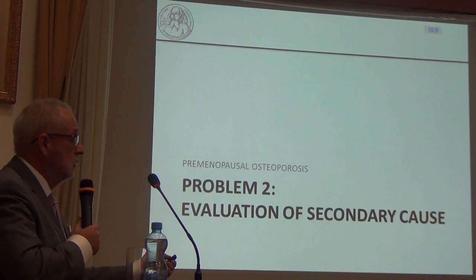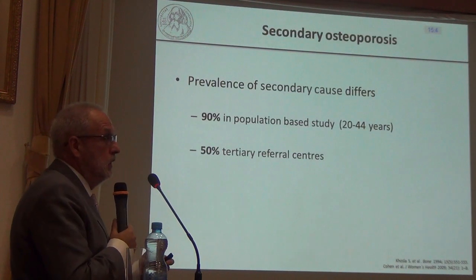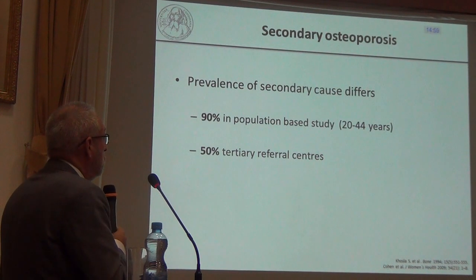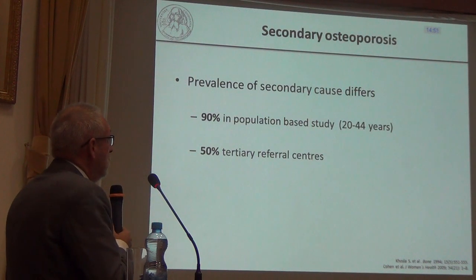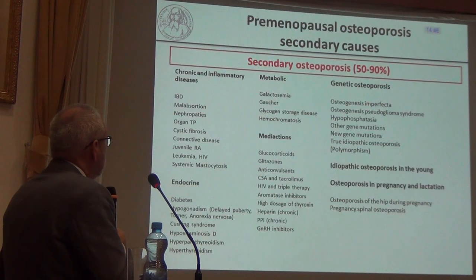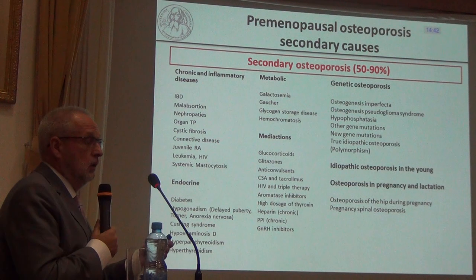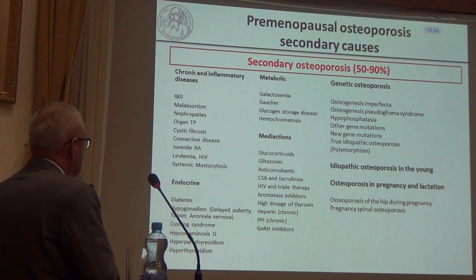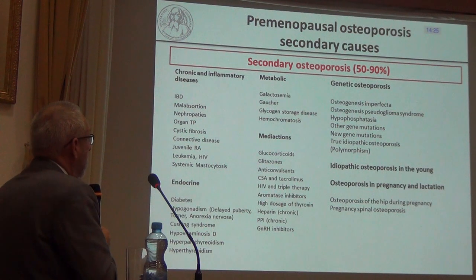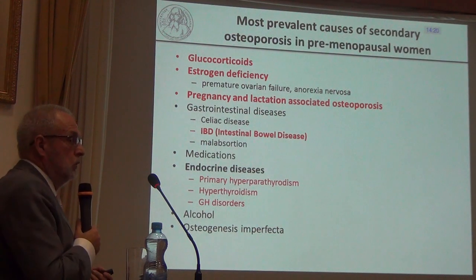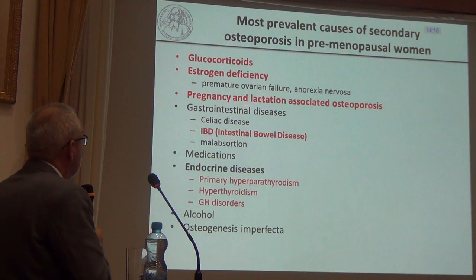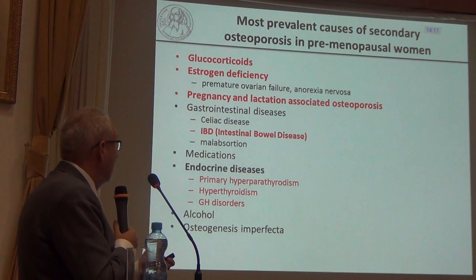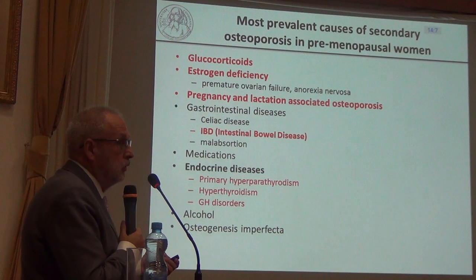When discussing premenopausal osteoporosis, secondary causes must be considered, as data indicate that 50 to 90% of premenopausal osteoporosis cases have a secondary cause. Many secondary causes exist, but those typical for premenopausal women include idiopathic osteoporosis in the young and osteoporosis in pregnancy and during lactation. The speaker will focus on the most prevalent disorders for which they have their own data.